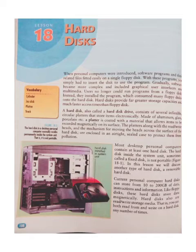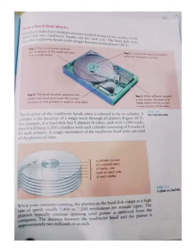اور working بھی fast کرتا تھا as compared to floppy disk۔ اور اس کو hard disk drive بھی کہا جاتا ہے اور یہ کافی ساری circular platters پر مشتمل ہے۔ زیادہ تر desktop میں ایک ہی hard disk use ہوتی ہے اور یہ system unit کے اندر ہوتی ہے اور اسے کبھی کبھی fixed disk بھی کہتے ہیں۔ ابھی جو hard disks ہیں وہ 10 سے 200 GB data store کر سکتی ہیں۔